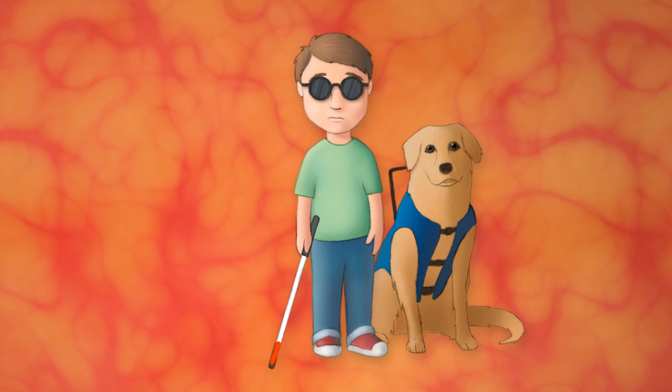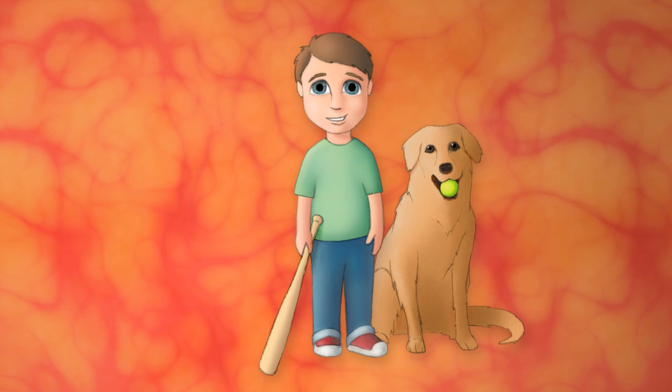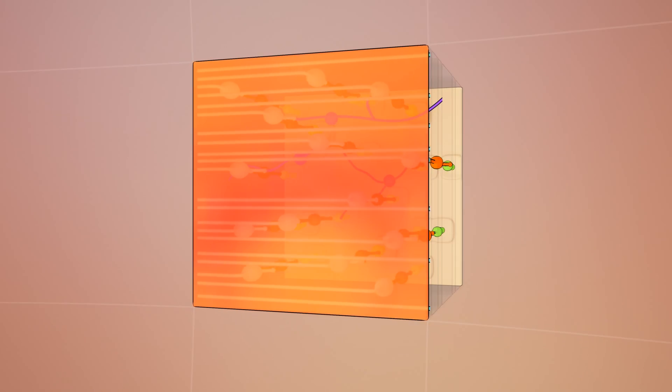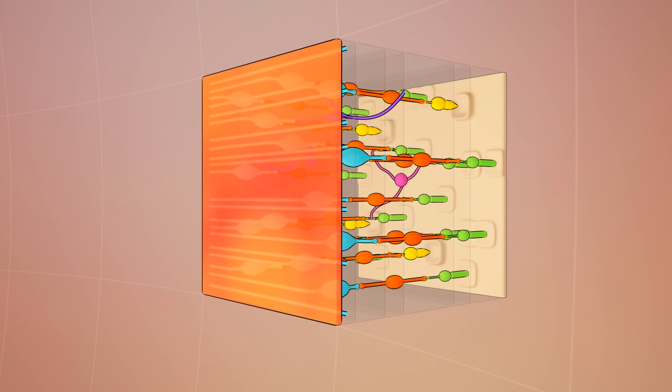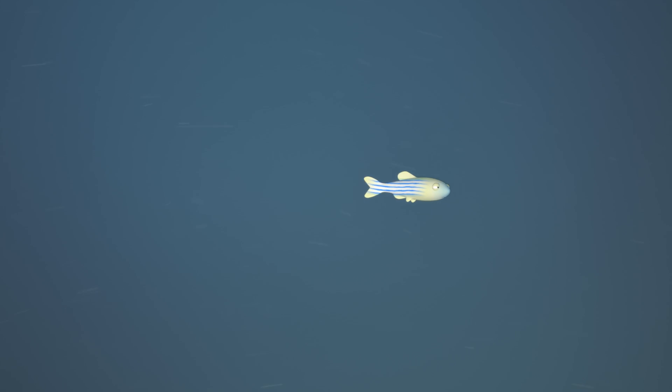Now imagine if the eye could regenerate itself so that a blind person could see again. To understand if that's possible, we need to grasp how the retina works and what it has to do with a multi-talented creature named the zebrafish.